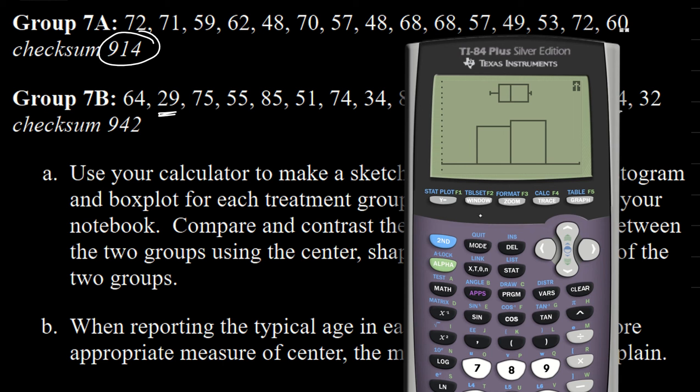I'll go back into my stats plots and instead of looking to list one as the source of my data, I'm gonna switch this to list two for plot number one and for plot two. They're both now looking at list two and if I hit graph now, yeah that's what I thought would happen.